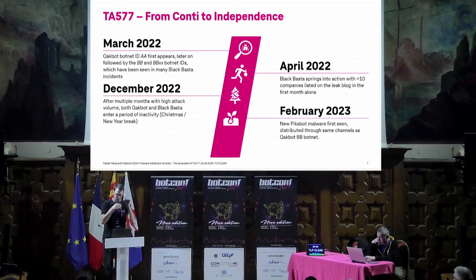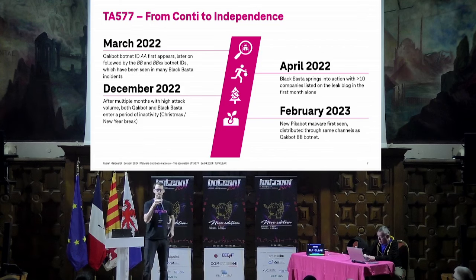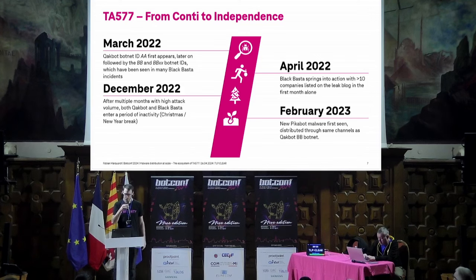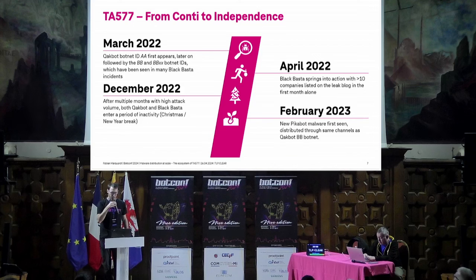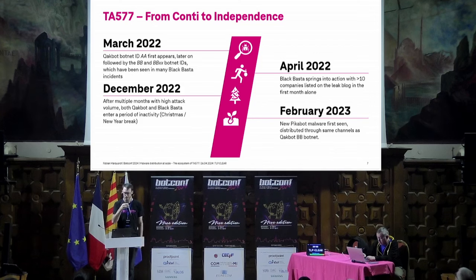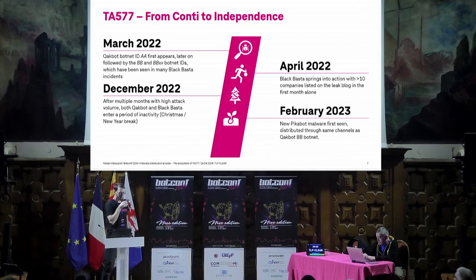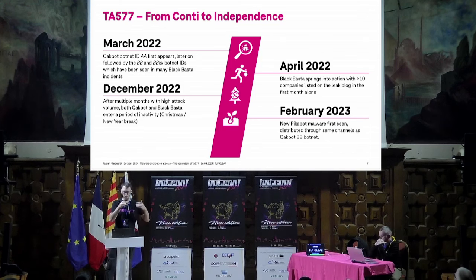Starting March 2022, there was a new Quackbot botnet — first called AA, then later renamed BB, BB01, and so on. We have seen in many incidents that this correlated with follow-up activities leading to Blackbuster ransomware incidents. Many believe BB is just an acronym for Blackbuster. Only one month later, in April 2022, Blackbuster was first seen posting victims to their leak blog — and they didn't start slow, with over 10 victims in the first month. Note this time correlation: March 2022 malware active, April 2022 ransomware group active. We will see that kind of time difference multiple times.